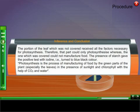Inference and conclusion: The portion of leaf which was not covered received all the factors necessary for photosynthesis. Therefore, that part could only photosynthesize, whereas the one which was covered could not manufacture food. The presence of starch gave the positive test with iodine, i.e. turned to blue-black color.